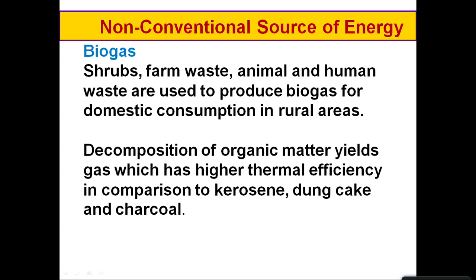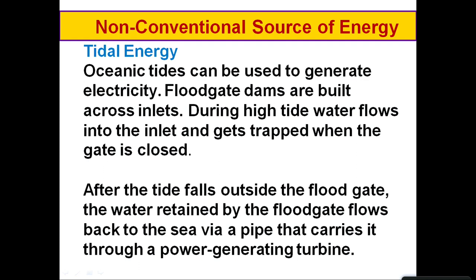Wind energy is an important non-conventional source of energy. Biogas uses shrubs, farm waste, animal waste and human waste to produce gas widely used for domestic consumption in rural areas. Decomposition of organic matter yields biogas, which has higher thermal efficiency compared to kerosene, dung cakes and charcoal.